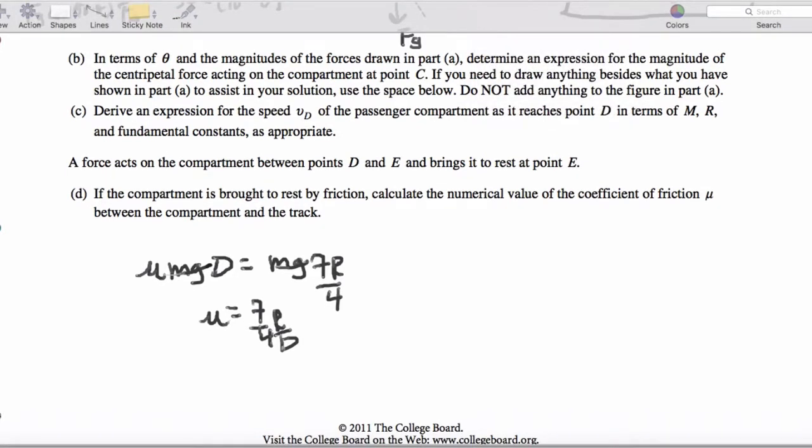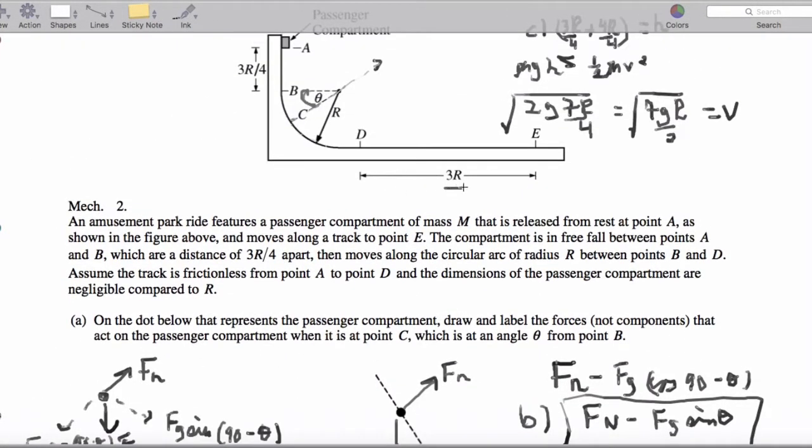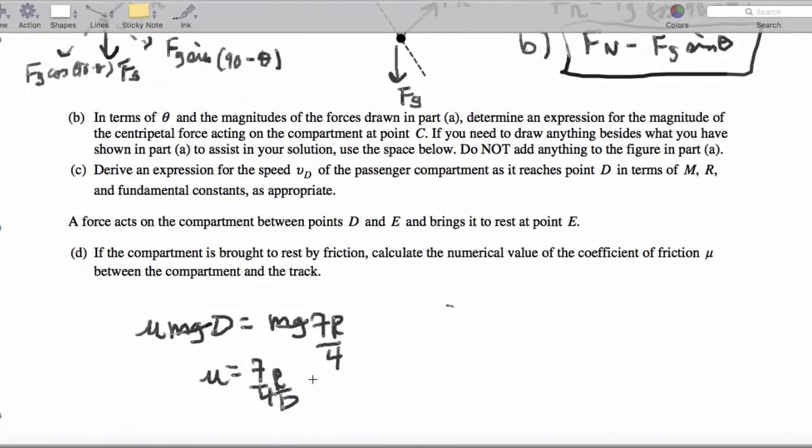Now, the beautiful part here is that this D, this distance that we're talking about, is 3r in length. So, I can say that this is 7r over 4 with the 3r here. Those cancel. I'm getting that mu equals 7 over 12.